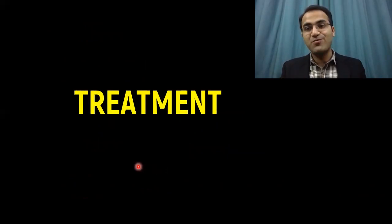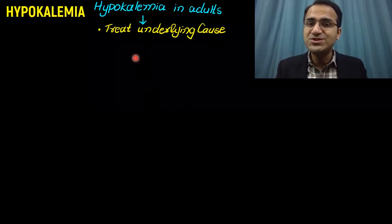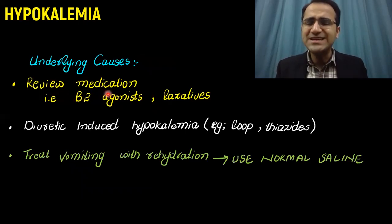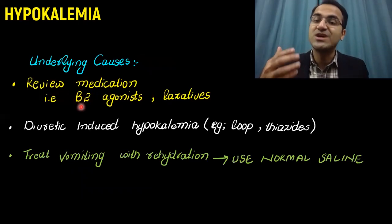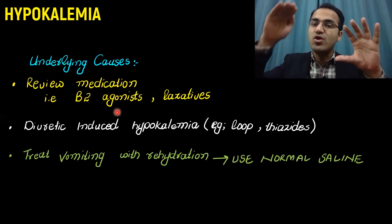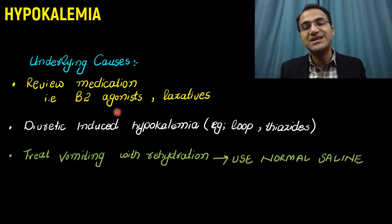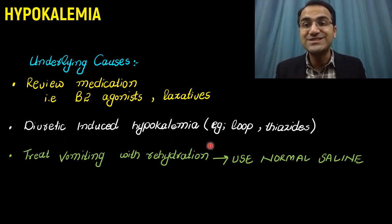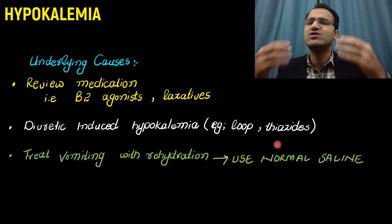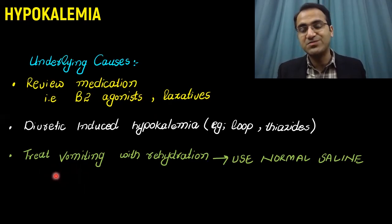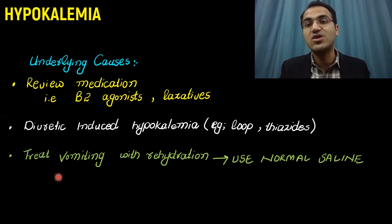Treatment of hypokalemia involves treating the underlying cause. Review the patient's medications — patients may be on sympathomimetic beta-2 agonist drugs, which drive potassium into the cells, lowering blood potassium. Look for laxative use or diuretic-induced hypokalemia; loop diuretics and thiazide diuretics cause potassium loss. If the patient is vomiting, rehydrate with normal saline.